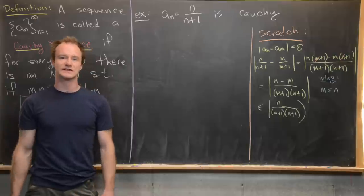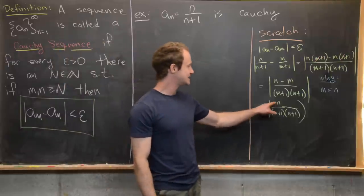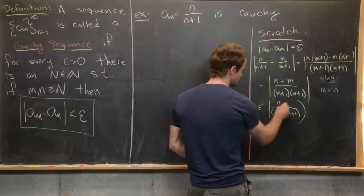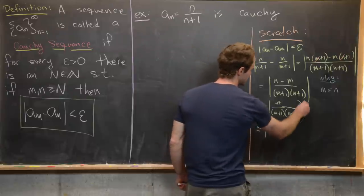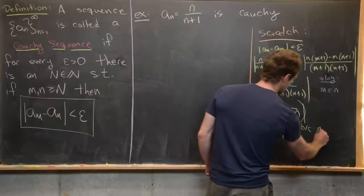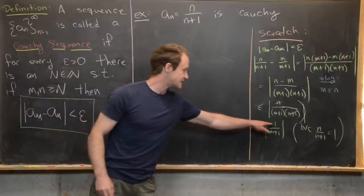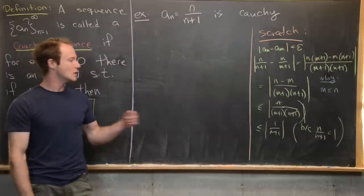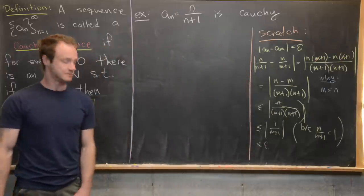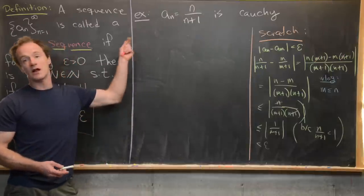We can cancel those terms continuing the inequality, so this is less than 1/(m+1), because n/(n+1) is less than one and bigger than zero. Notice we've got 1/(m+1) and we can definitely pick some value of capital N so that that is less than epsilon. Now that we've sketched this out we can rewrite our example as a proof in the correct order.